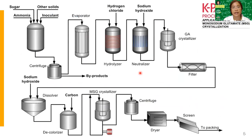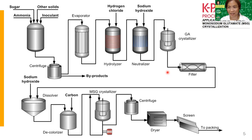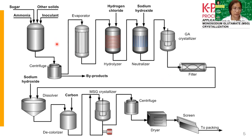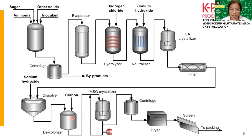Another example is the production of monosodium glutamate (MSG) — the umami ingredient you put in food. This process involves a lot of downstream processing before you get that white crystal. They have the nutrients and the microorganism, they ferment it — that's the production process — and everything after is downstream processing. It involves a lot of unit operations. After fermentation, they centrifuge to obtain only the liquid part, then evaporate to remove water, then hydrolyze the fermentation products.